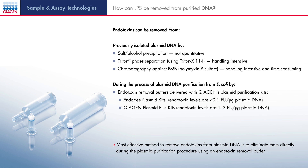It is much easier and more effective to eliminate endotoxins directly during the DNA purification procedure. Anion exchange purification combined with an endotoxin removal buffer wash, as provided with Qiagen's EndoFree Plasmid Kits, leads to endotoxin levels of less than 0.1 EU per microgram DNA, which is suitable for very sensitive cells such as human umbilical vein endothelial cells.